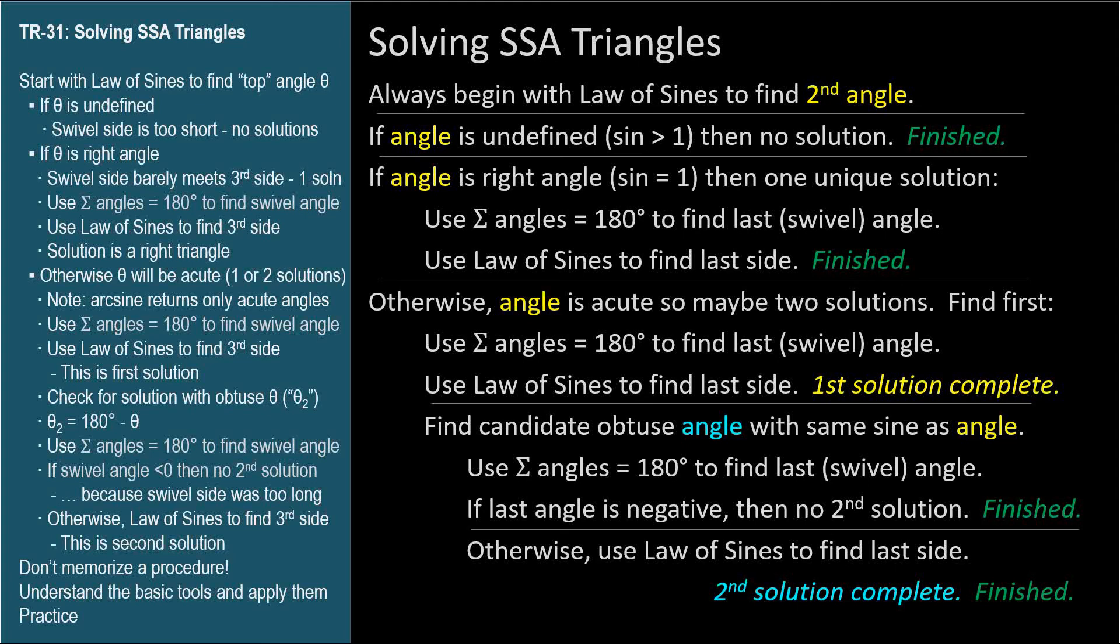Use the sum of the angles to find the last angle. If it's negative stop because the only solution is the one you've already found. If it's positive there is a second solution. Use the law of sines to find the last side. Solving SSA triangles just involves a few extra steps to see if there are two solutions.